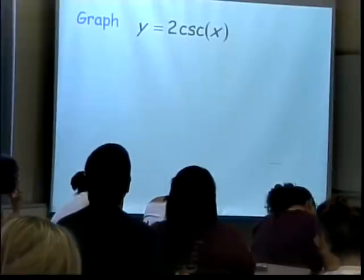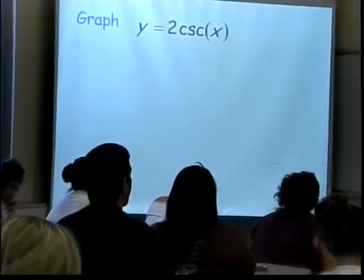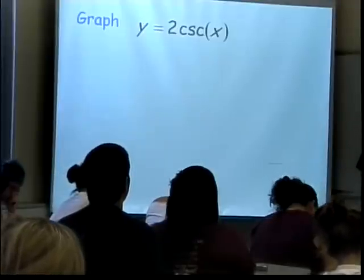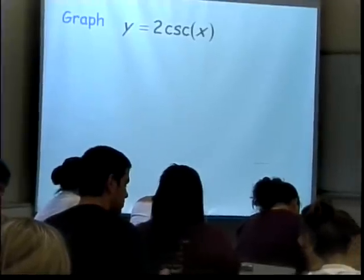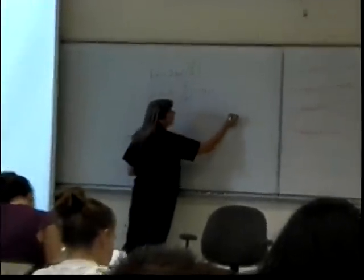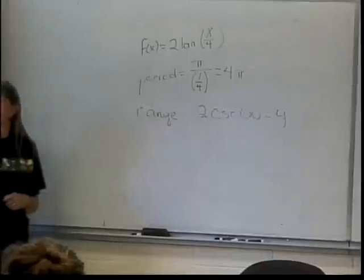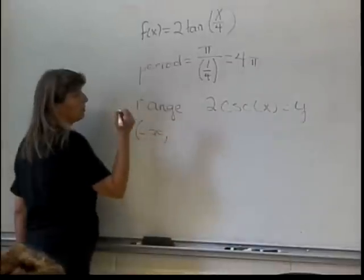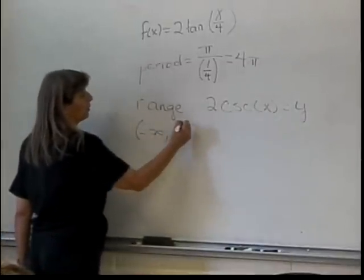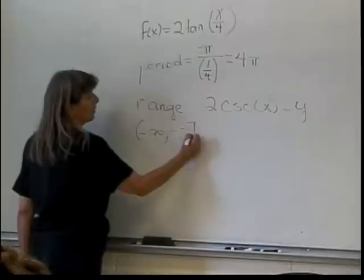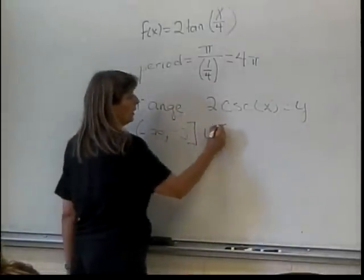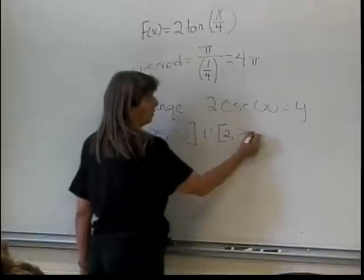Let's see what other ones we got here. 2 cosecant of x. What's going to happen to this? Well, usually our standard question on this one is, what's the range? What's the range of 2 cosecant of x? I should probably name it, so it was y. What's the range of this thing? Negative infinity to negative 2, included or not? Included. And then? 2 to infinity, and again I include the 2.